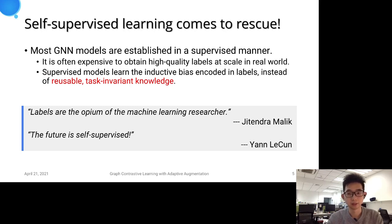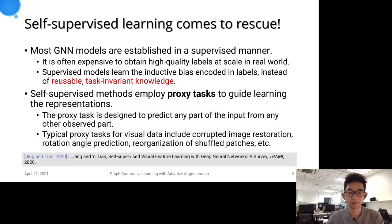Nowadays, self-supervised graph representation learning has attracted a lot of research attention. In essence, self-supervised models employ proxy tasks or pretext tasks to guide learning the representations. These tasks are framed by predicting a subset of information using the rest in the input data.